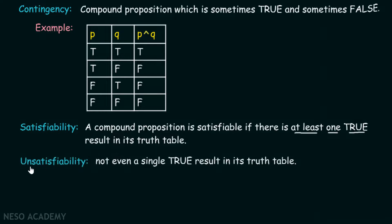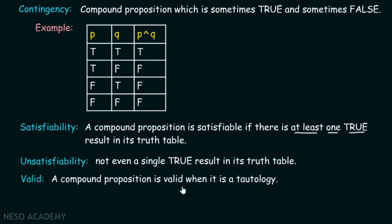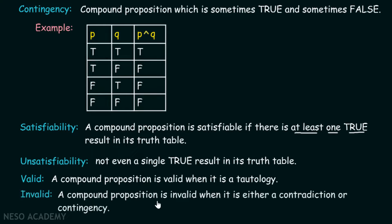Unsatisfiability means you will not be able to find even a single true result in the truth table of a compound proposition. So we can say that a contradiction is always unsatisfiable. A compound proposition is valid when it is a tautology, and invalid when it is either a contradiction or a contingency. This is an important point: not being a tautology does not mean it is always a contradiction — it can be a contingency as well. Therefore, invalid covers both contradiction and contingency.